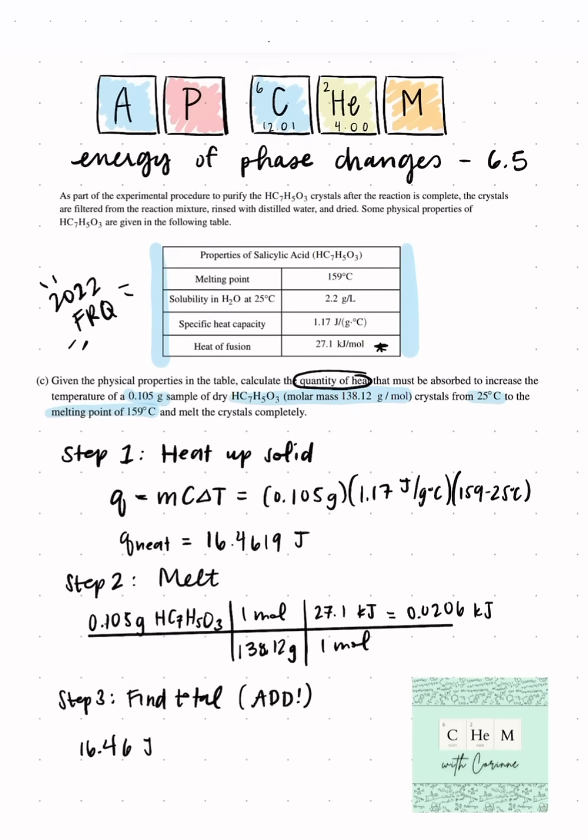We're just going to add those two values together. So again, first we found the heat associated with just heating up the solid. Then we use the heat of fusion to find out the heat associated with that phase change. This is always the case no matter how many phase changes you have, you got to add up the total for each step.